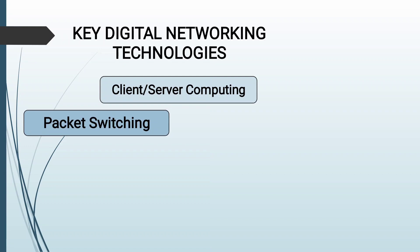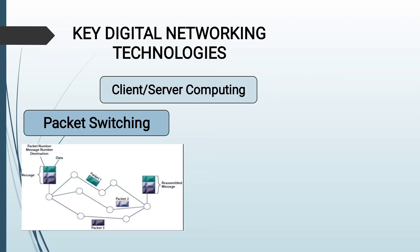There is also packet switching. Using a technique known as packet switching, digital messages are divided into packages known as packets, sent along various communications lines as they become available, and then re-assembled once they reach their destinations. Data are grouped into small packets which are transmitted independently over various communications channels and re-assembled at the final destination.